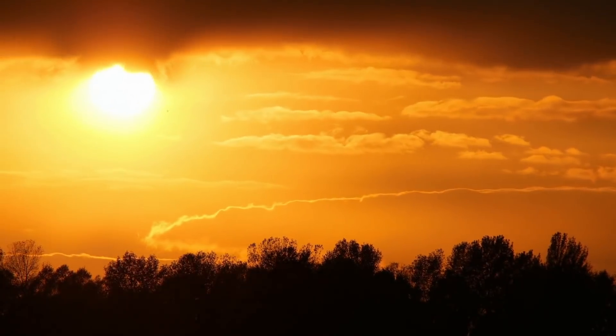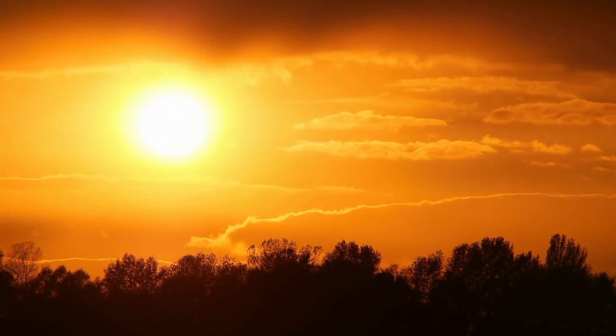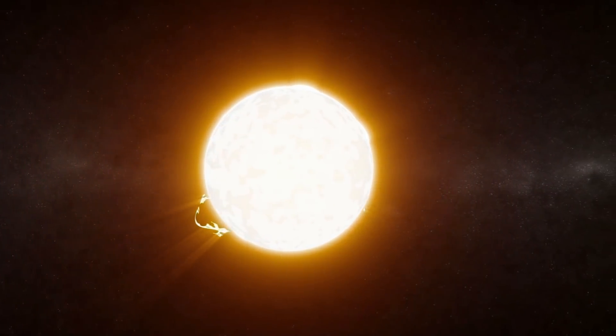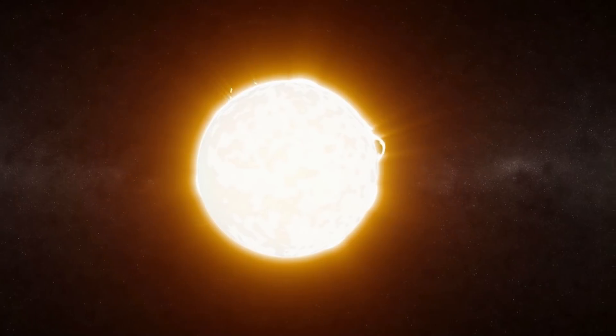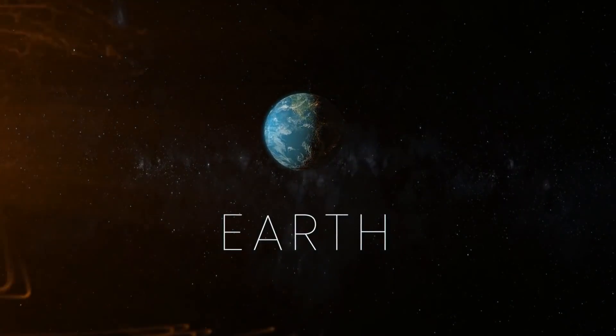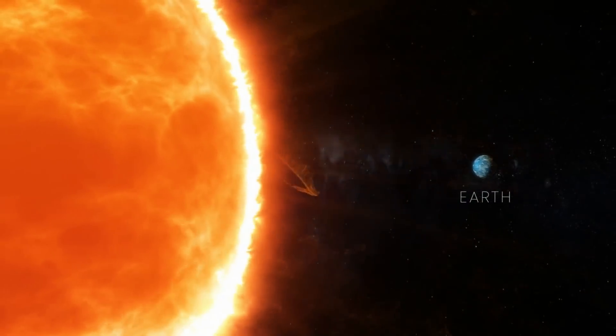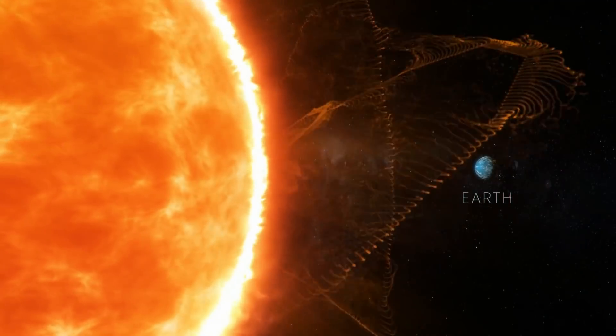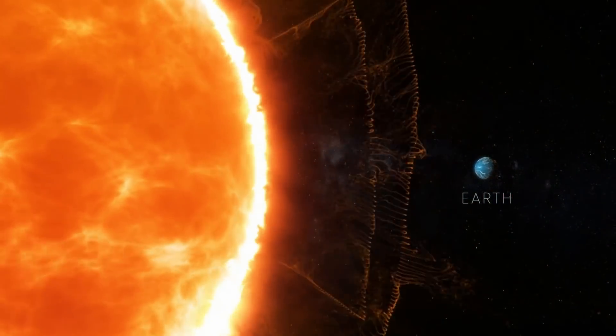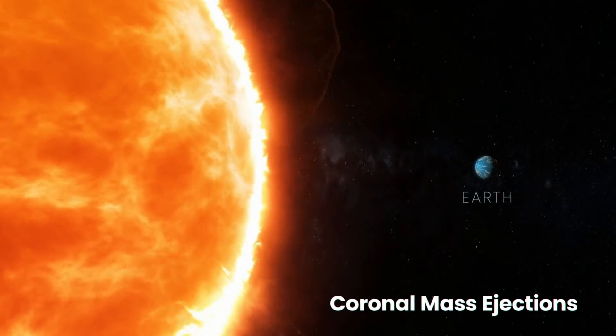From planet Earth, the Sun looks like a rather stable celestial body, but as we get closer, we can see the Sun is very volatile. Solar flares occasionally shoot out of the surface, blasting a large cloud of energetic and highly magnetized plasma into space, called coronal mass ejections.